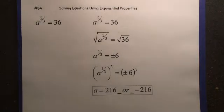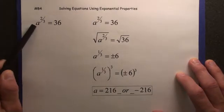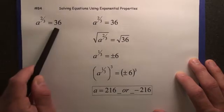Video number 84, Solving Equations Using Exponential Properties. In this example, we have a to the 2/3rds, the variable here is the base. The variable to the 2/3rds equals 36.